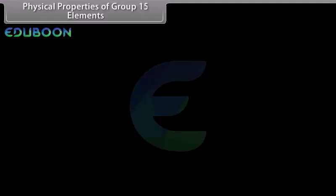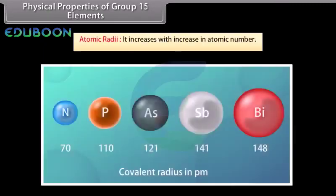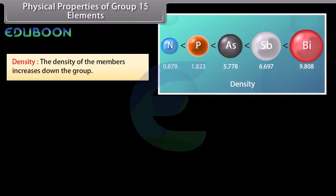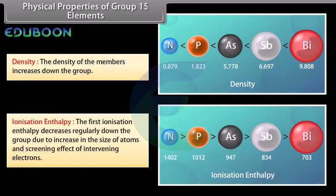Physical properties of group 15 elements: Atomic radii increase with increase in atomic number. Melting point and boiling point increase on going down the group; however, the melting point of bismuth is unusually low, which may be due to its greater tendency to form 3 rather than 5 covalent bonds, resulting in weak forces of attraction between atoms in the solid state. Density increases down the group. The first ionization enthalpy decreases regularly down the group due to increase in atomic size and the screening effect of intervening electrons.